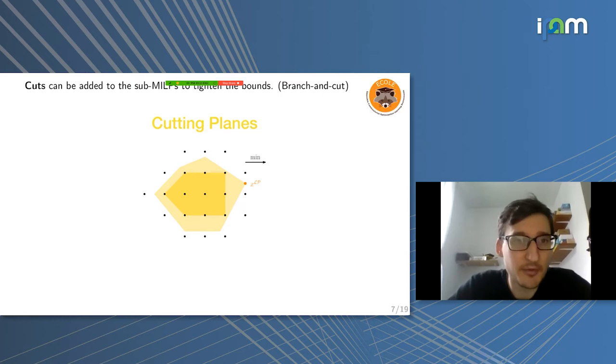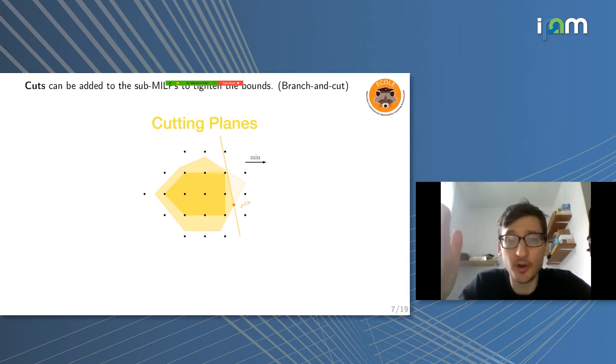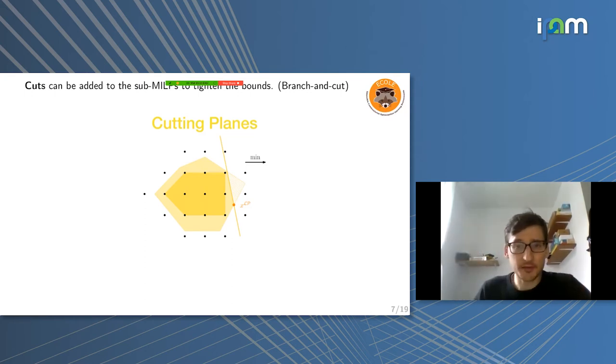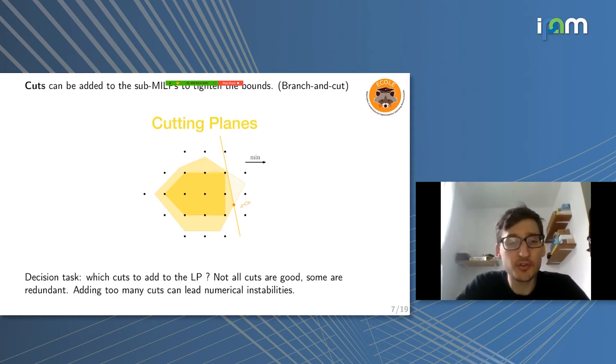Another component is cuts, which was the topic of the previous talk. Within branch and bound, you can also add cuts to tighten the linear program relaxation of your MILP. There exist routines which would generate cuts, which are guaranteed to remove a portion of the feasible space without removing any integer variable. But an open question is, which cuts do you actually want to add to the LP? Because many of the cuts will actually make very little progress and many of them will be redundant. If you add too many cuts, you will end up with numerical instabilities in your problem. So maybe you don't want to add all of them. That's also a question that you have to answer when you build a solver.